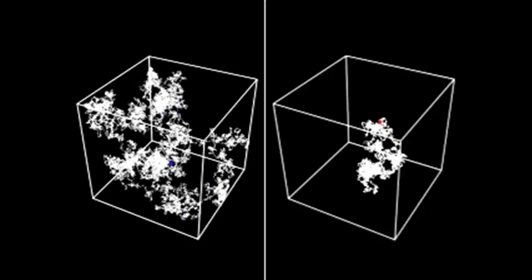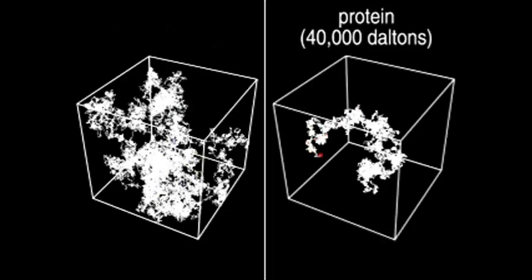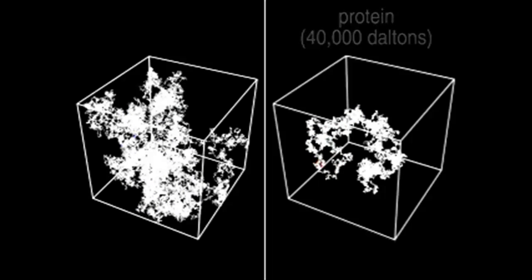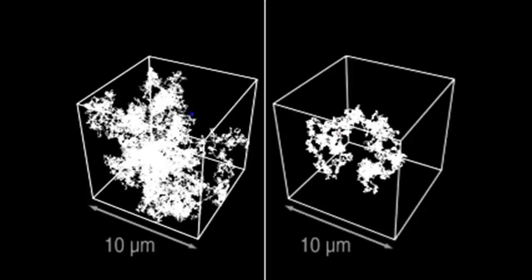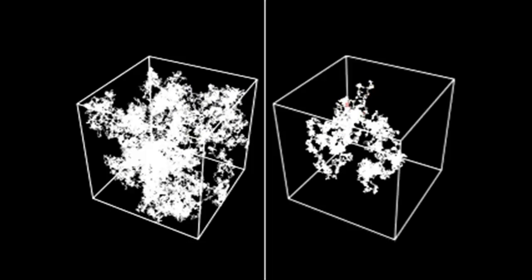Our simulation shows the degree to which a small sugar molecule on the left and a larger protein on the right explore the interior space of a cell, here shown as a cube with a 10 micrometer side. The animation represents one second in real time.